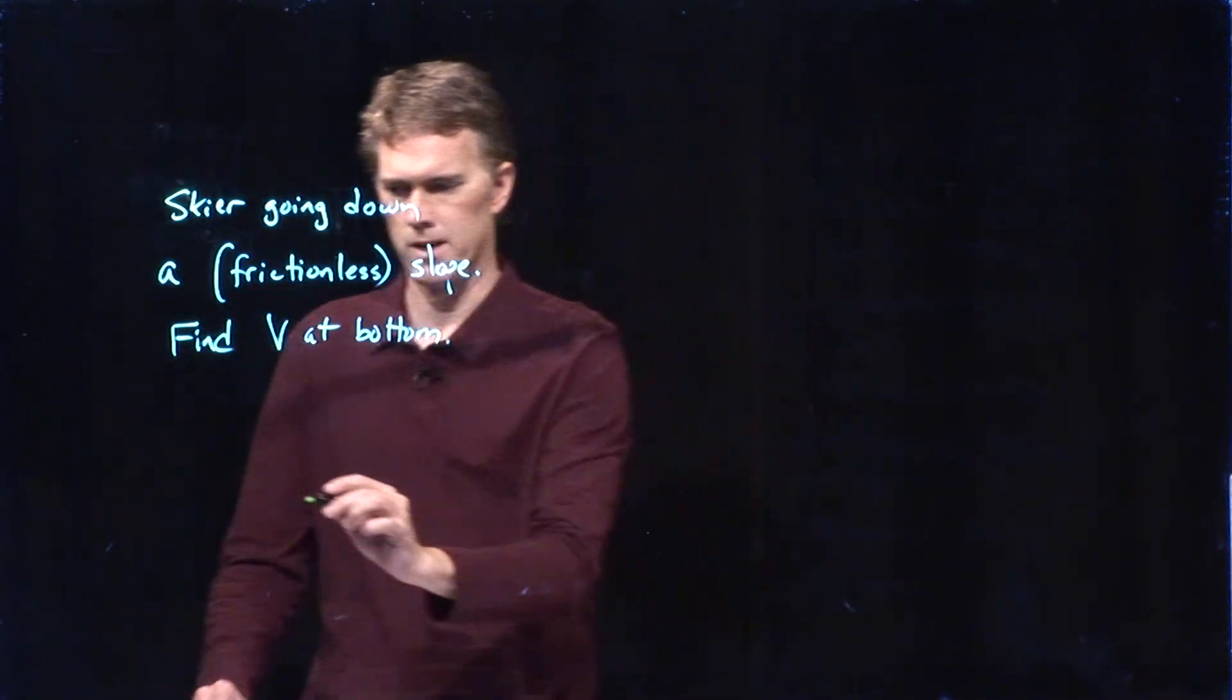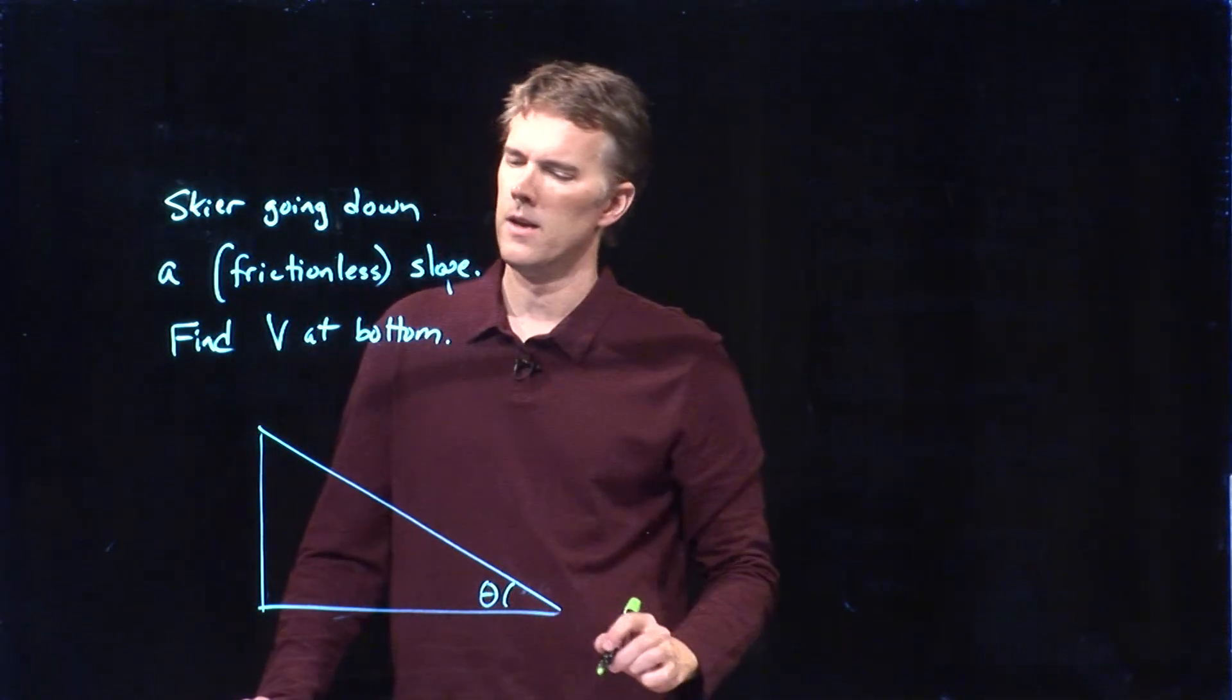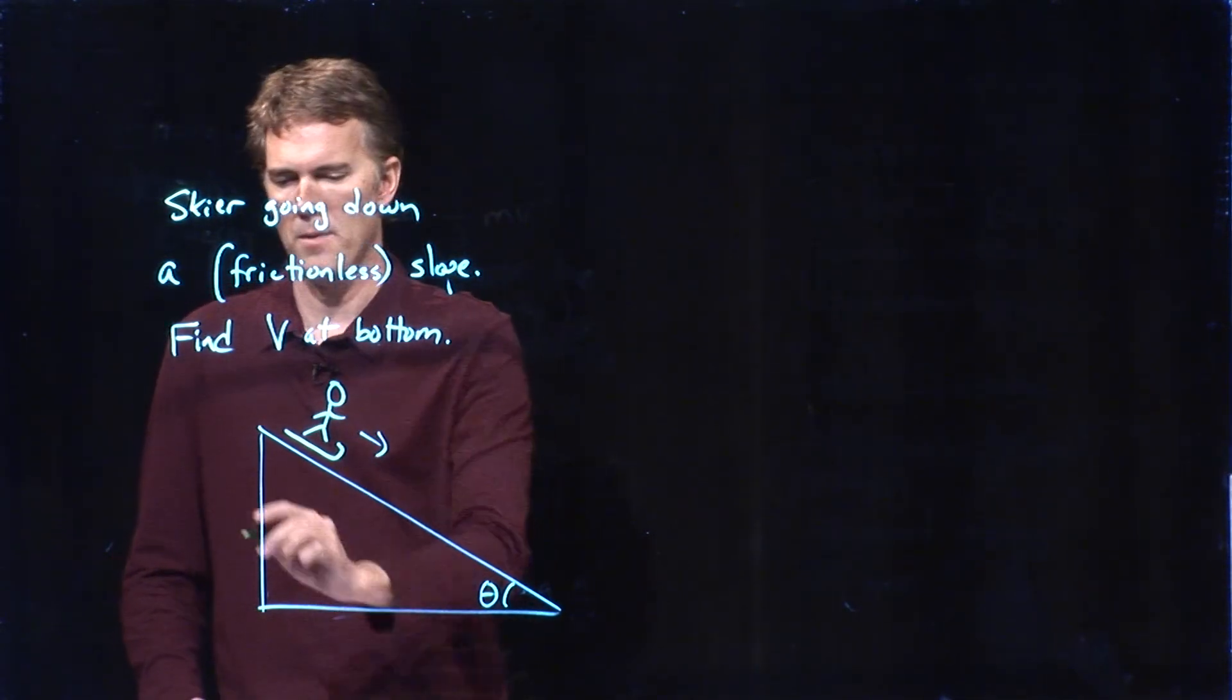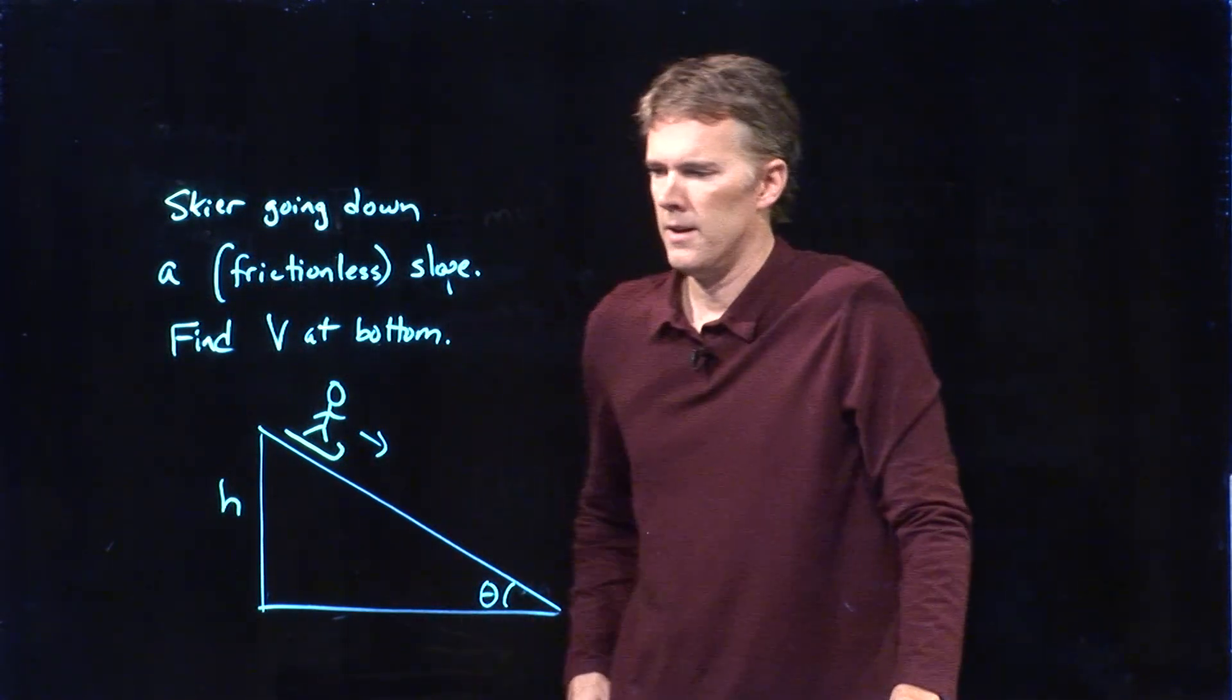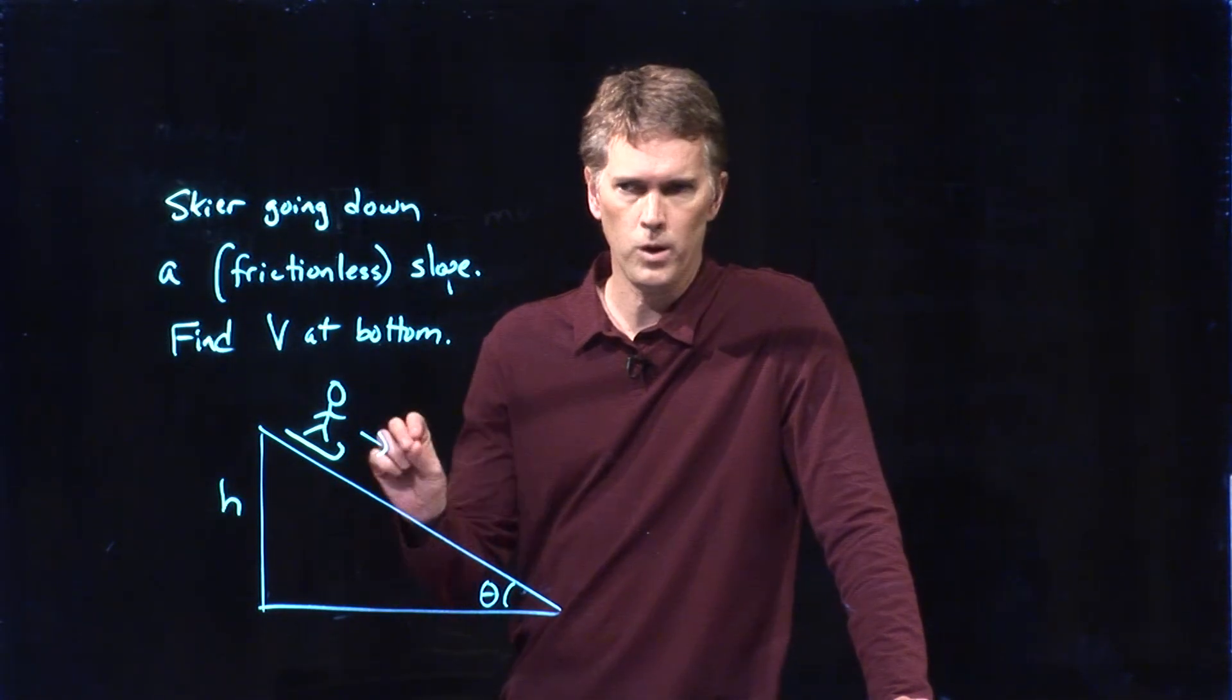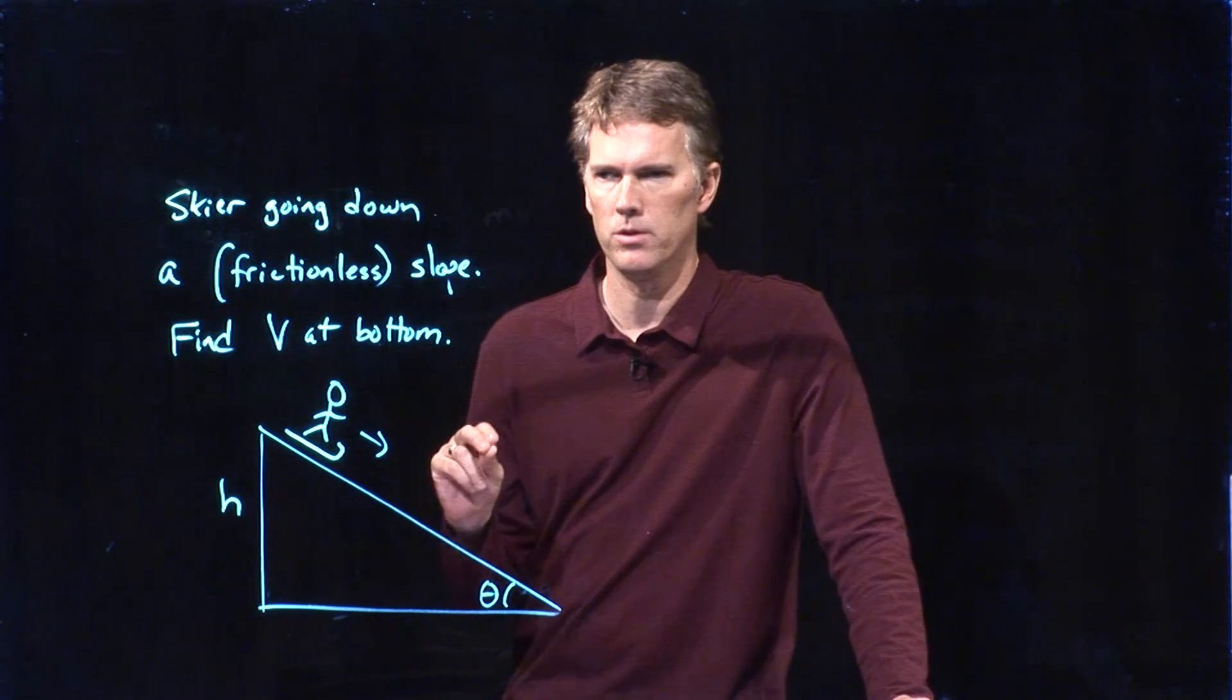All right, let's draw a picture of what we're talking about. Here's our slope. We've got an incline here of angle theta, and now we've got a skier that is going down the slope, and we'll say that they start at a height h. Now, we know a little bit how to solve these problems, right? We've done these problems before with kinematic equations. Let's see if we can attack it from that point of view to start.